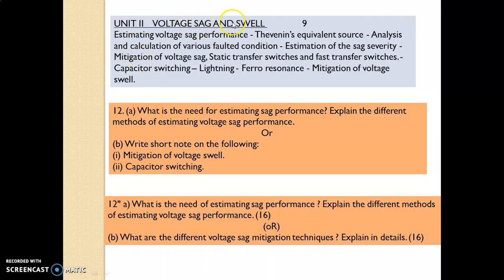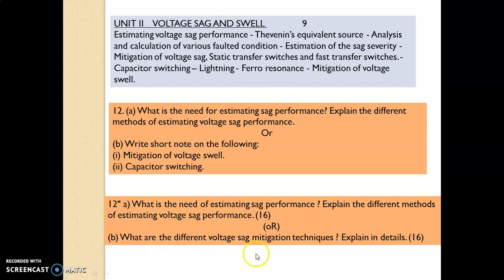Unit 2 is Voltage Sag and Swell. The important questions are: what is the need for estimating sag performance? Explain the different methods of estimating voltage sag performance. Write short notes on mitigation of voltage swell and capacitor switching. Also explain the different voltage sag mitigation techniques in detail. These are repeated questions asked from Unit 2.